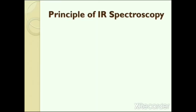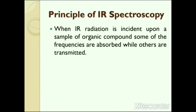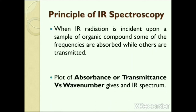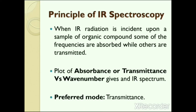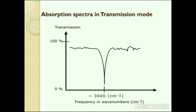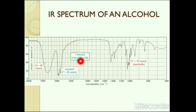Next is the principle of IR spectroscopy. When infrared radiation is incident upon a sample of an organic compound, some of the frequencies are absorbed while others are transmitted. A plot of absorbance or transmittance versus wave number gives an infrared spectrum. The most preferred mode in infrared spectroscopy is transmittance mode. In this picture you can see an absorption spectrum in transmission mode.